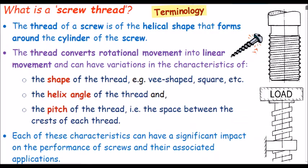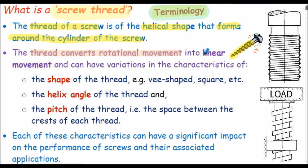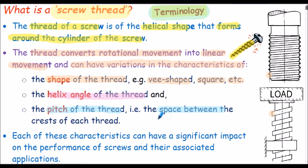Let's consider some basic terminology. The thread of a screw is the helical shape that forms around the cylinder of the screw. The thread converts rotational movement into linear movement, and threads can have variations in the shape of the thread — it can be V-shaped or square shaped, among others. Variations can also occur in the helix angle of the thread, which is the incline of the thread form, and in the pitch of the thread, which is the space between the crests of each thread. Each of these characteristics can have a significant impact on the performance of the screws.